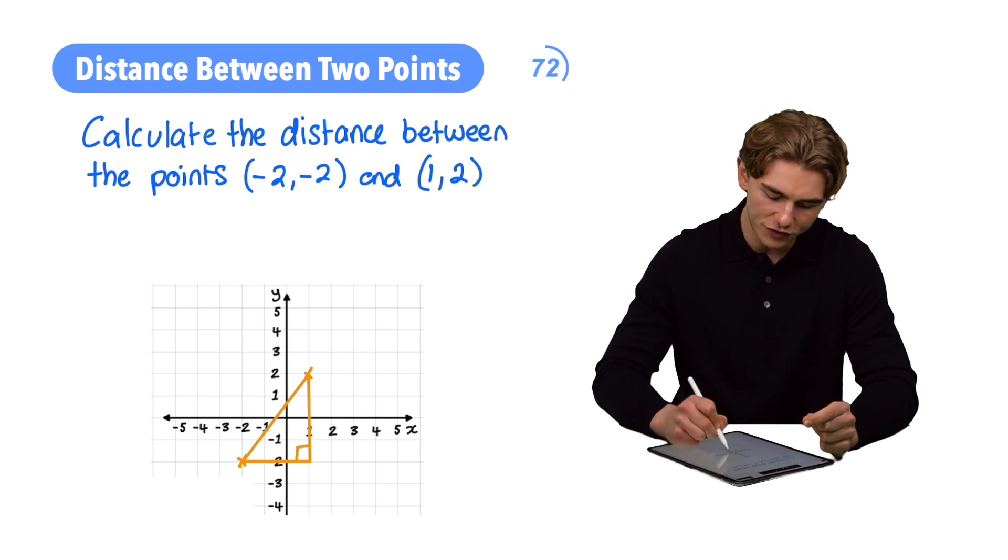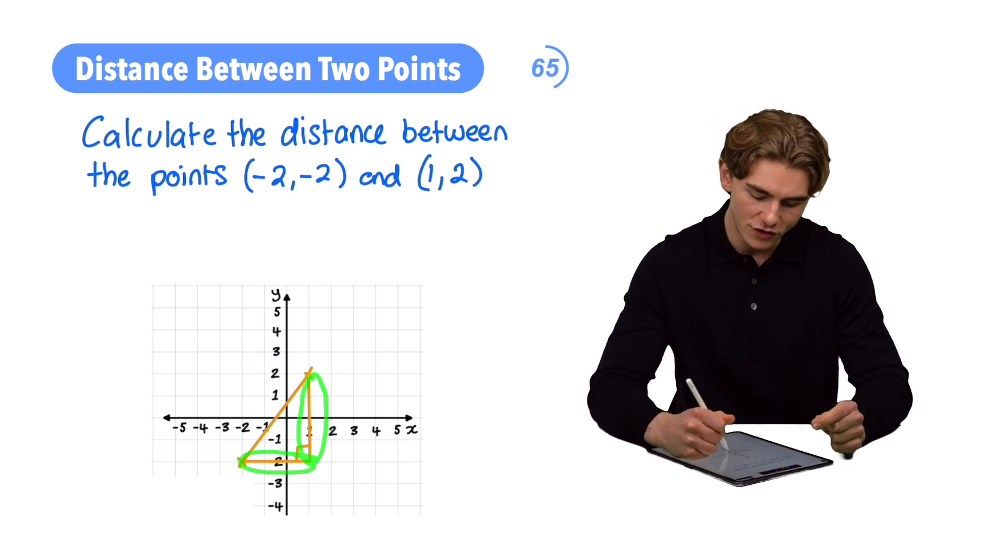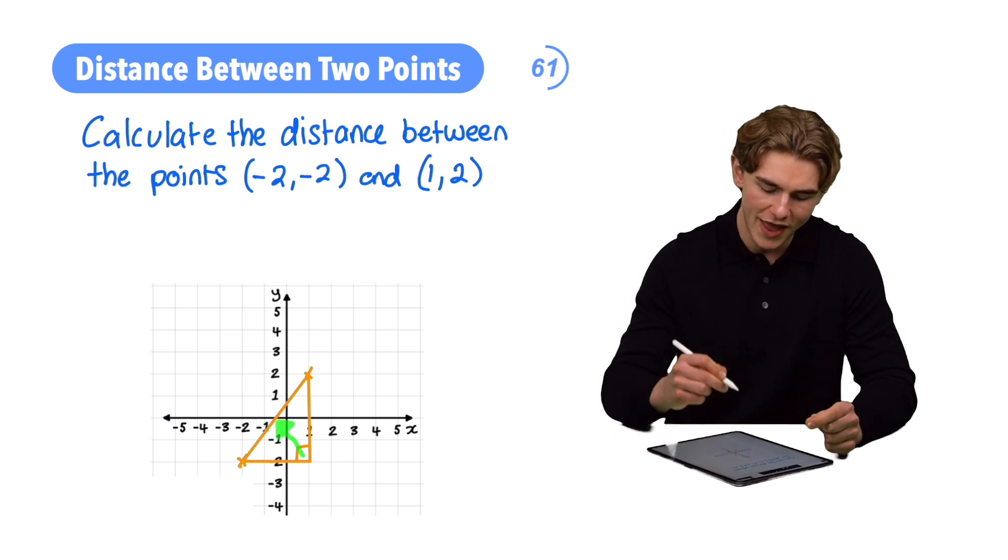Now, we can work out the bottom length of this triangle and the vertical height of this triangle. Then, we can use Pythagoras's theorem to work out what is essentially the hypotenuse of our right-angled triangle. Let's get it done.